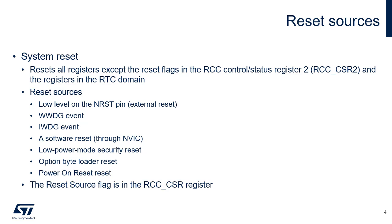The system reset sources are the external reset generated by a low-level on the NRST pin, a window watchdog event, an independent watchdog event, a software reset request, a low-power mode security reset which is generated when stop, standby, or shutdown mode is entered but is prohibited by the option byte configuration, an option byte loader reset, and a brownout or power-on reset. The reset source flag can be found in the RCC control and status register.